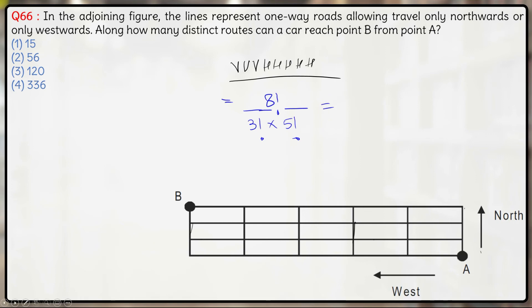So you have eight factorial divided by five factorial is eight into seven into six divided by three factorial which is six, six cancels out, eight into seven is 56 here.